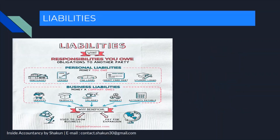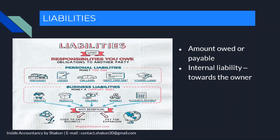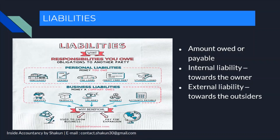Moving on to Liabilities. Liabilities are the amounts payable or the obligations the business has towards third parties. Liability towards the owner, proprietor, or partner is termed an internal liability, while liability towards outsiders — other than the owners — is termed an external liability. The obligation towards the owner is internal, and the obligation towards third parties with whom the business interacts is external liability.